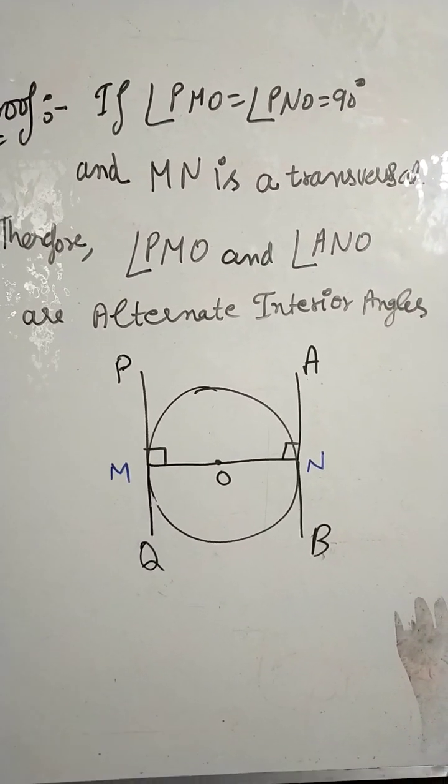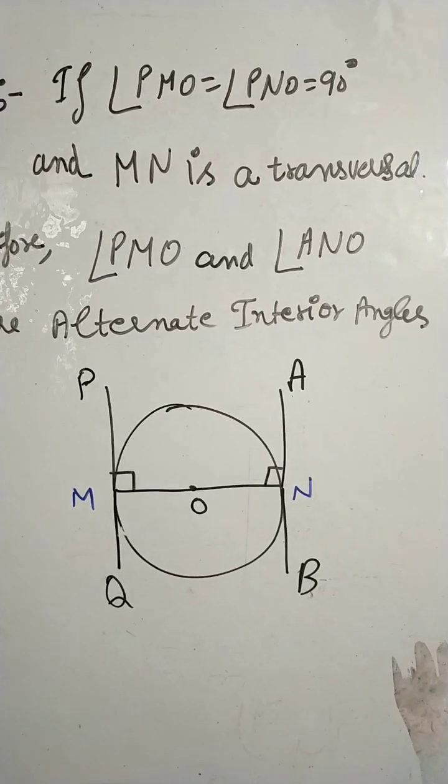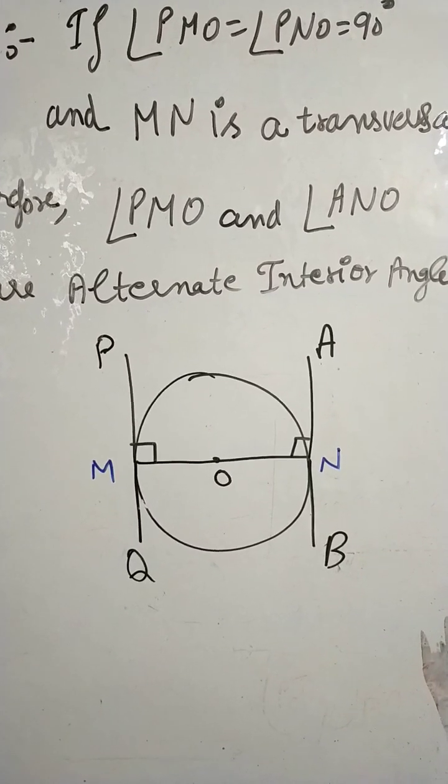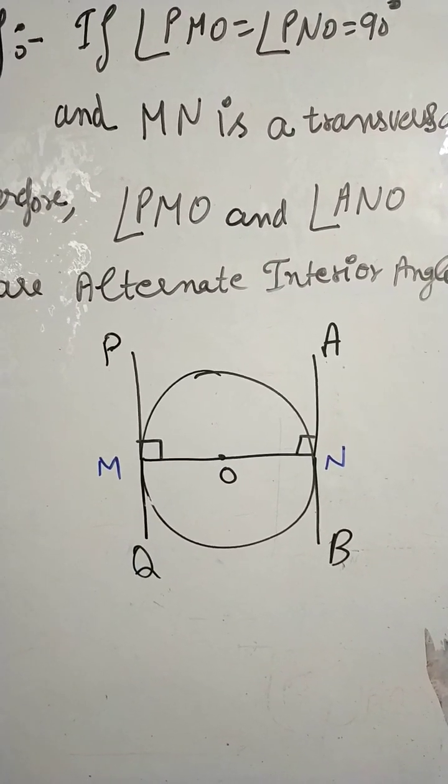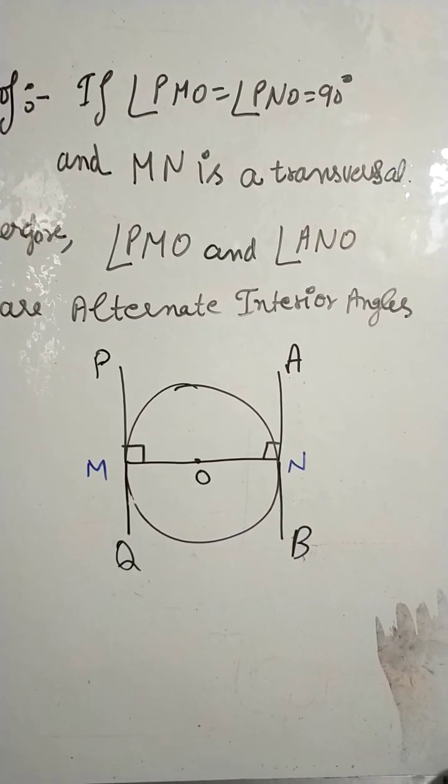then PMO and ANO are alternate interior angles according to the parallel line theorem. We can say MN is a transversal and AB and PQ are parallel, and also the alternate interior angles are equal.